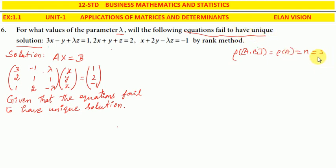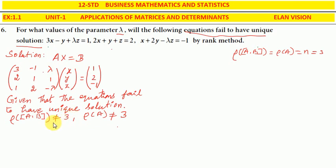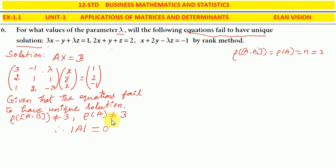For the system to fail to have a unique solution, the rank of A must not equal 3. So rank of A not equal to 3 means the determinant of A equals 0, not equal to 3. This is the coefficient matrix, so we set the determinant value equal to 0.